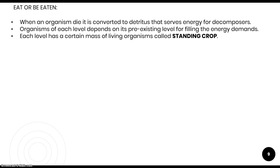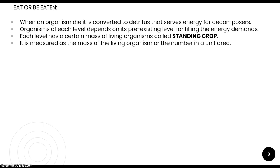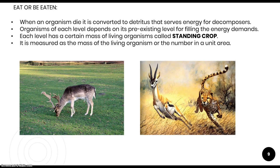Standing crop is illustrated as follows: a large field with grass — the total mass of that grass is the standing crop for that level. If there are 10 deer, the total mass of those 10 deer is the standing crop for that level. One tiger's mass is the standing crop for the top level. Standing crop is measured as mass of living organisms or their number per unit area.